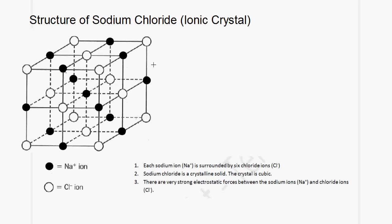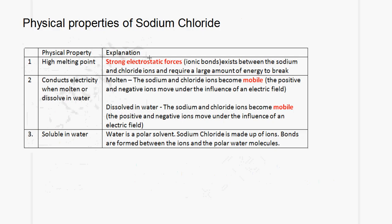Let us now look at an ionic crystal — for example, sodium chloride. Each sodium ion is surrounded by six chloride ions. The dark circles represent the sodium ions and the white ones represent the chloride ions. Sodium chloride is a crystalline solid and the crystal is cubic. There are very strong electrostatic forces between the sodium ions and the chloride ions, and therefore a large amount of energy is required to separate the ions.